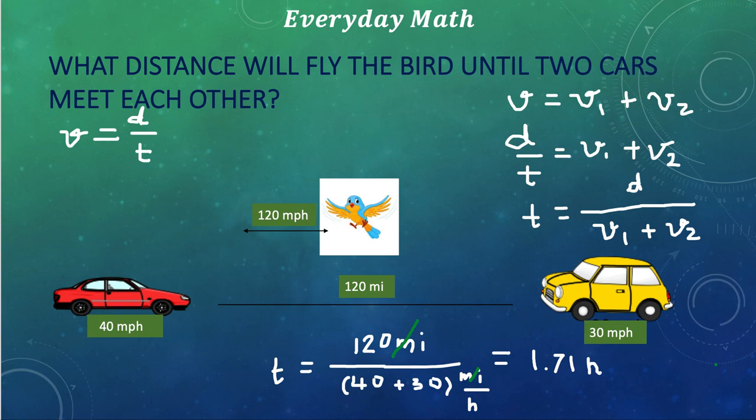So, we are looking for the distance to find. And if we are looking for the distance, the distance is going to be equal to V times T. The velocity of the bird as it is flying, or the speed of the bird, is 120 miles per hour.